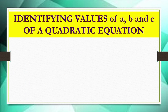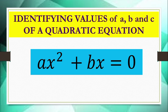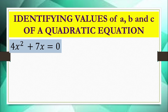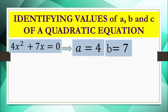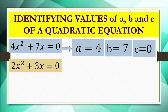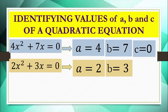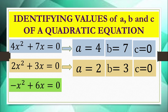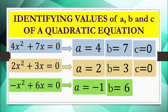Let's also identify the values of a, b, and c in the form ax² plus bx equals 0. For 4x² plus 7x equals 0: a is 4, b is 7, and c is 0. For 2x² plus 3x equals 0: a is 2, b is 3, and c is 0. For negative x² plus 6x equals 0: a is negative 1 — we must be careful with the negative symbol — b is 6, and c is 0. Notice that in the ax² plus bx equals 0 form, the value of c is always 0.